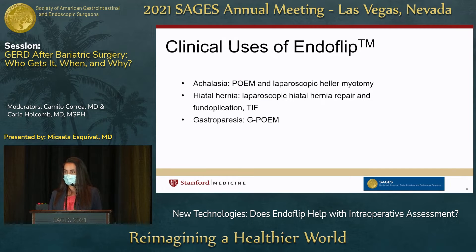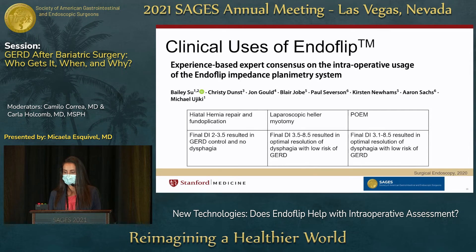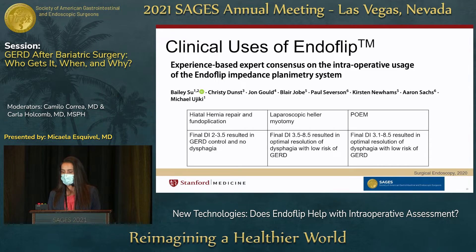Clinical uses of Endoflip: it's definitely used as an adjunct diagnostic modality for patients with motility disorders, predominantly in the foregut. It can also be used therapeutically for achalasia, during hiatal hernia repair, and during pyloric myotomy. There are several studies looking at how Endoflip can predict outcomes and establish repeatable protocols with target numbers. This consensus study looks at intraoperative usage across various procedures — something we can attempt to mimic in bariatric surgery.